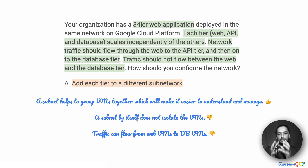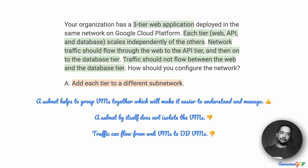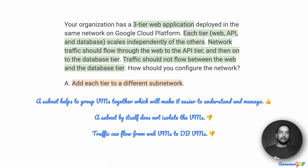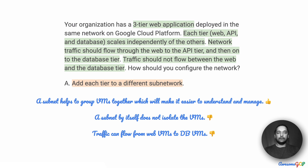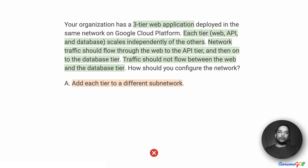A subnet helps to group VMs together, which makes it easier to understand and manage — and I'm talking about multiple subnets within the same region. But a subnet by itself does not isolate the VMs, because subnets can talk to each other not just in one region but in multiple regions. Just having separate subnets does not keep the VMs isolated. In this particular case, traffic can flow from the web VMs to the DB VMs without going through the API VMs, which is definitely not something we want. Therefore we will eliminate option A.